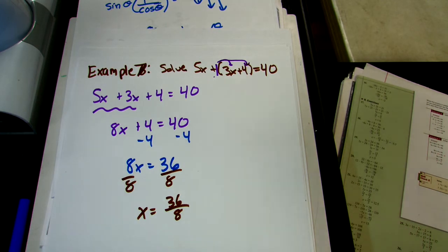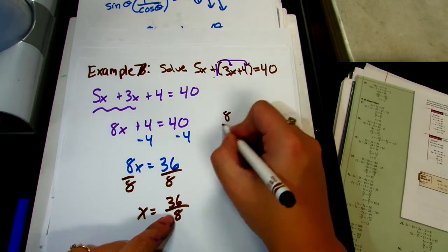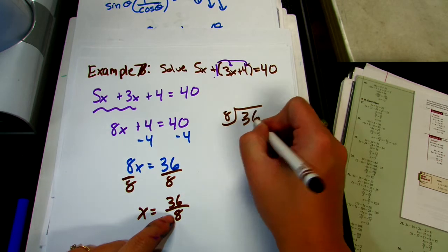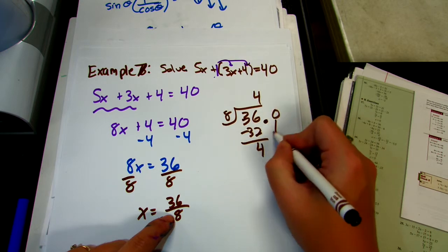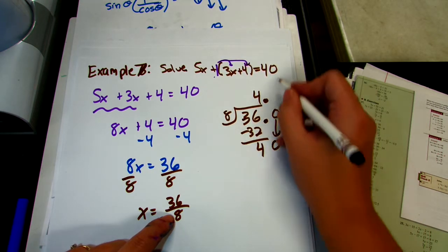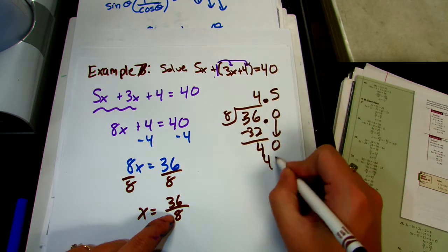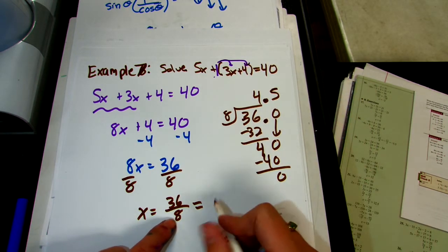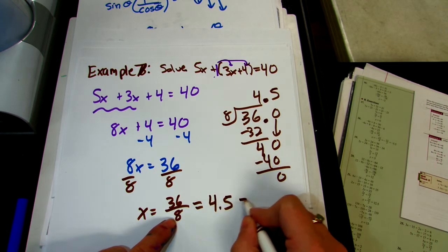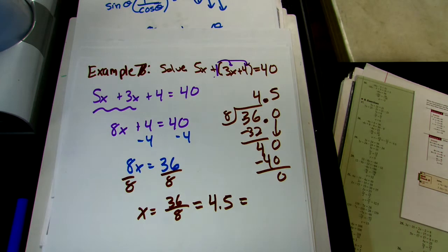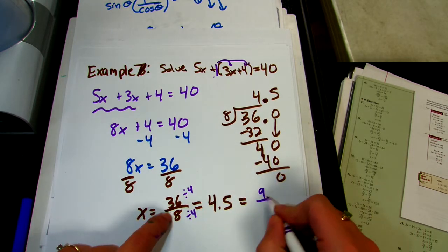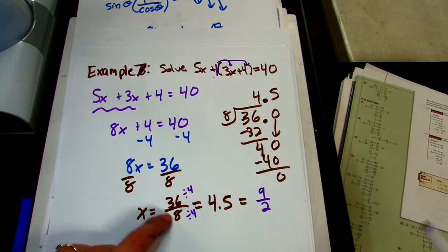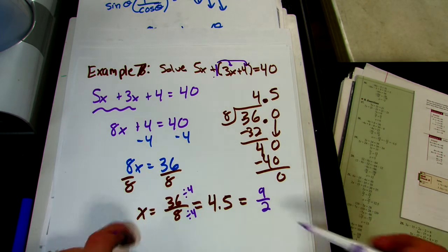8 does not go into 36 evenly, so you could get a decimal answer: 8 into 36 goes 4 times giving 32, annex a 0, and 8 goes into 40 five times — so 36 over 8 equals 4.5. Or you could reduce: divide both 36 and 8 by 4 to get 9 over 2, and 9 over 2 is the same as 4.5. Either of these two answers is correct — you have to reduce or give the decimal.